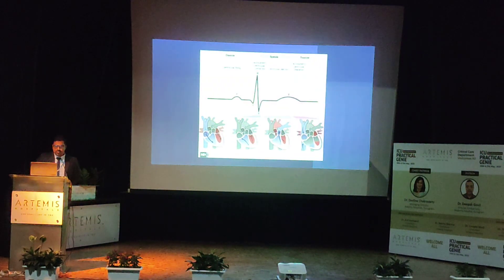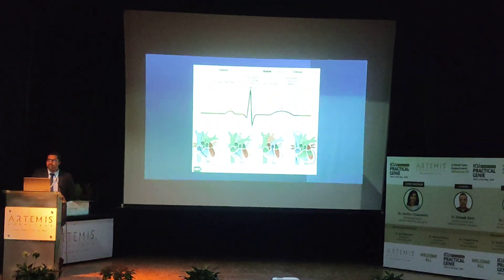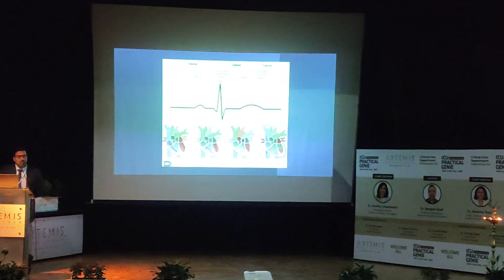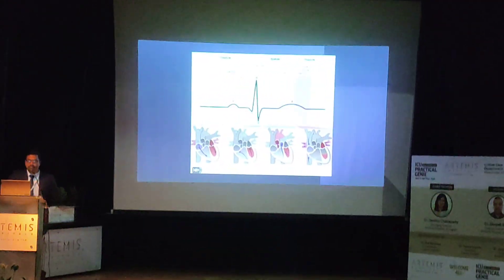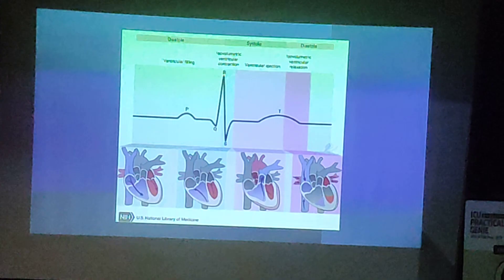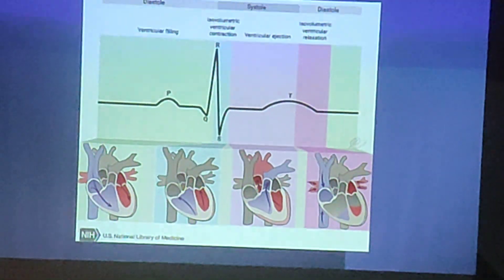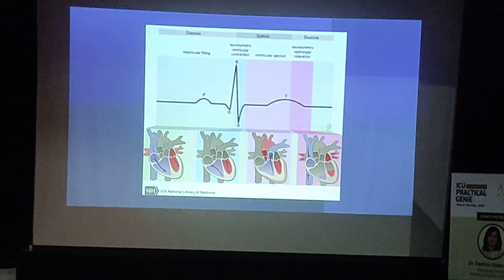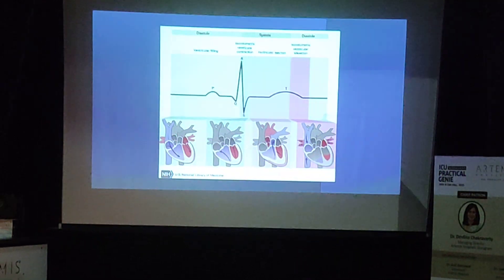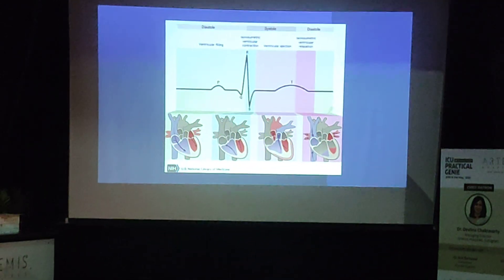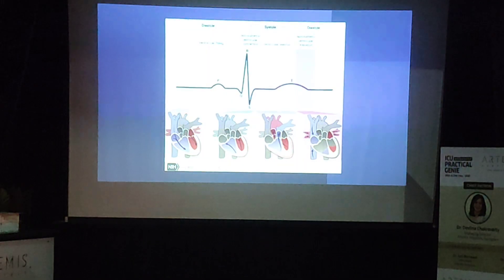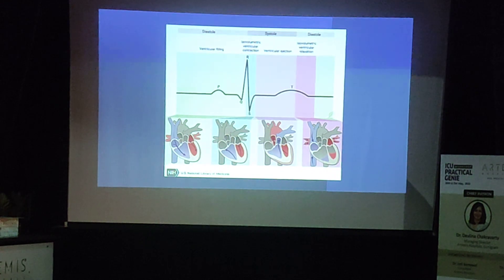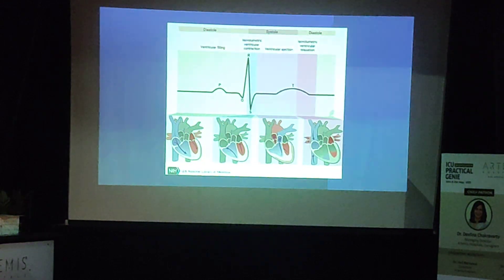At the outset, we'll just see the ECG. We must have seen this piece of paper a million times while working in wards and in the ICU every day. What are the events that parallel this ECG is very important. As we can see, at the P wave, the event occurring is ventricular filling. At the time of the QRS complex, the corresponding phase of the cardiac cycle is isometric ventricular contraction. And the T and U waves correspond mostly to the end of systole and the beginning of diastole.